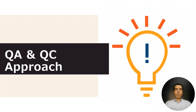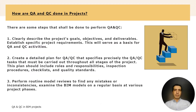So, what is the QA and QC approach and how to do it on BIM projects? There are some steps that shall be followed in order to make sure that we are performing good quality assurance and quality control. First, we have to clearly describe the project's goals and objectives and to define clearly the deliverables that are expected from this project.